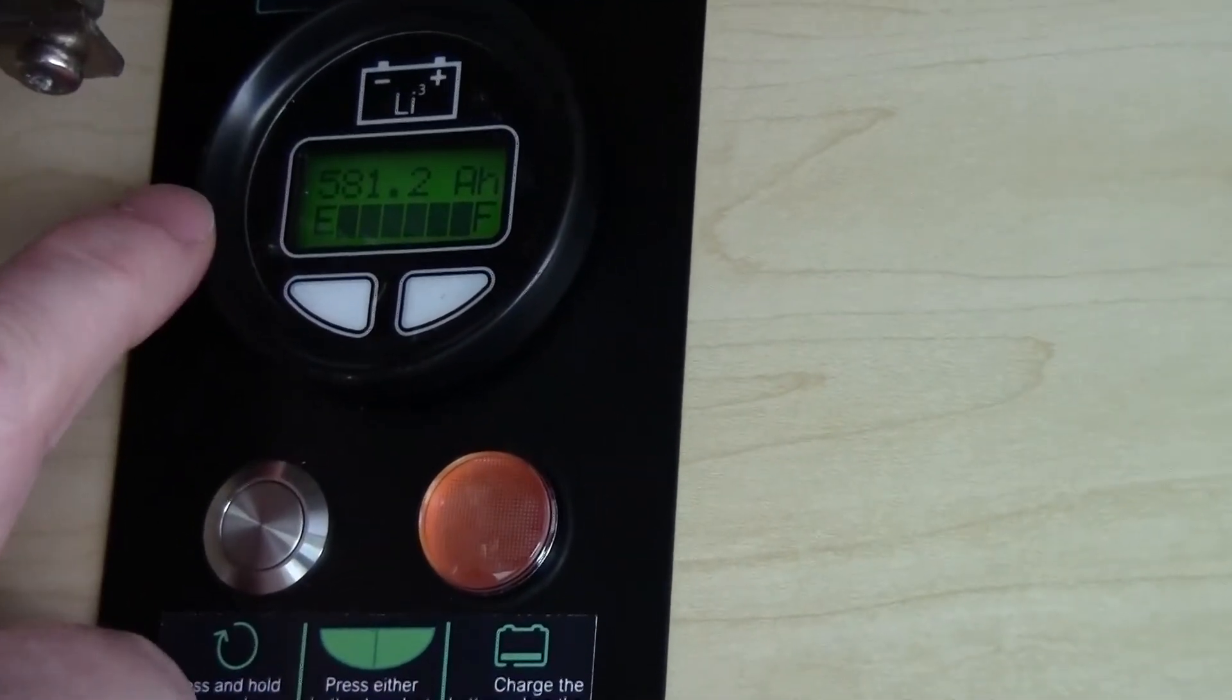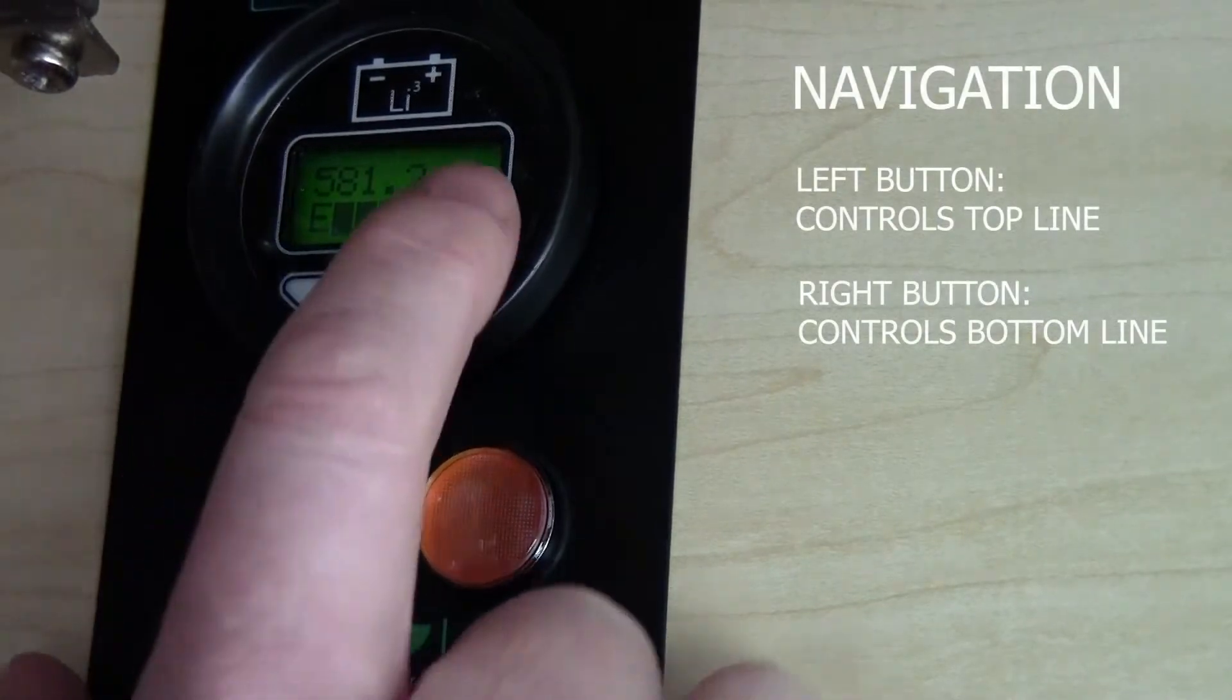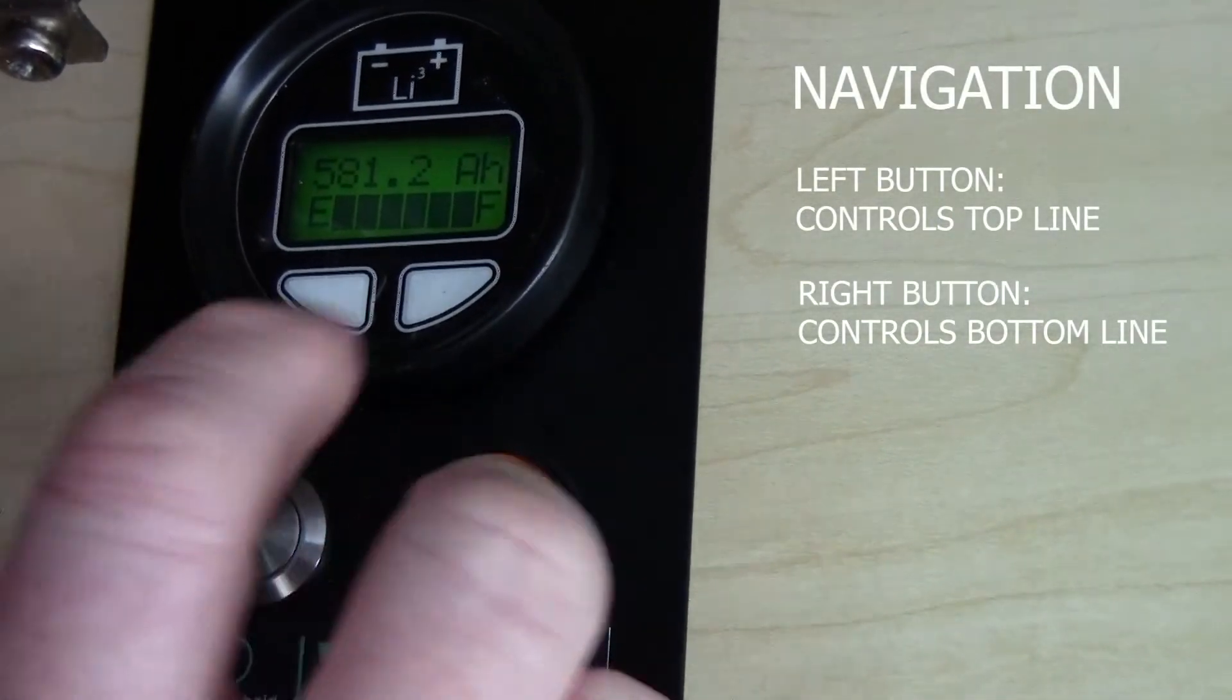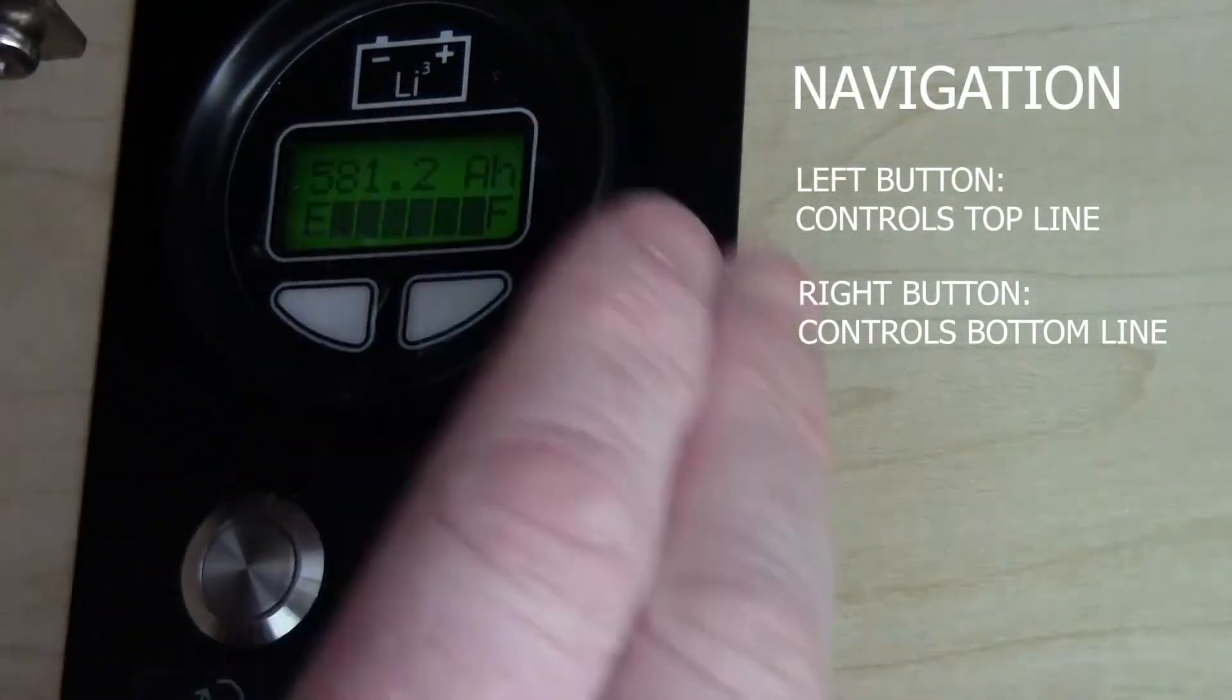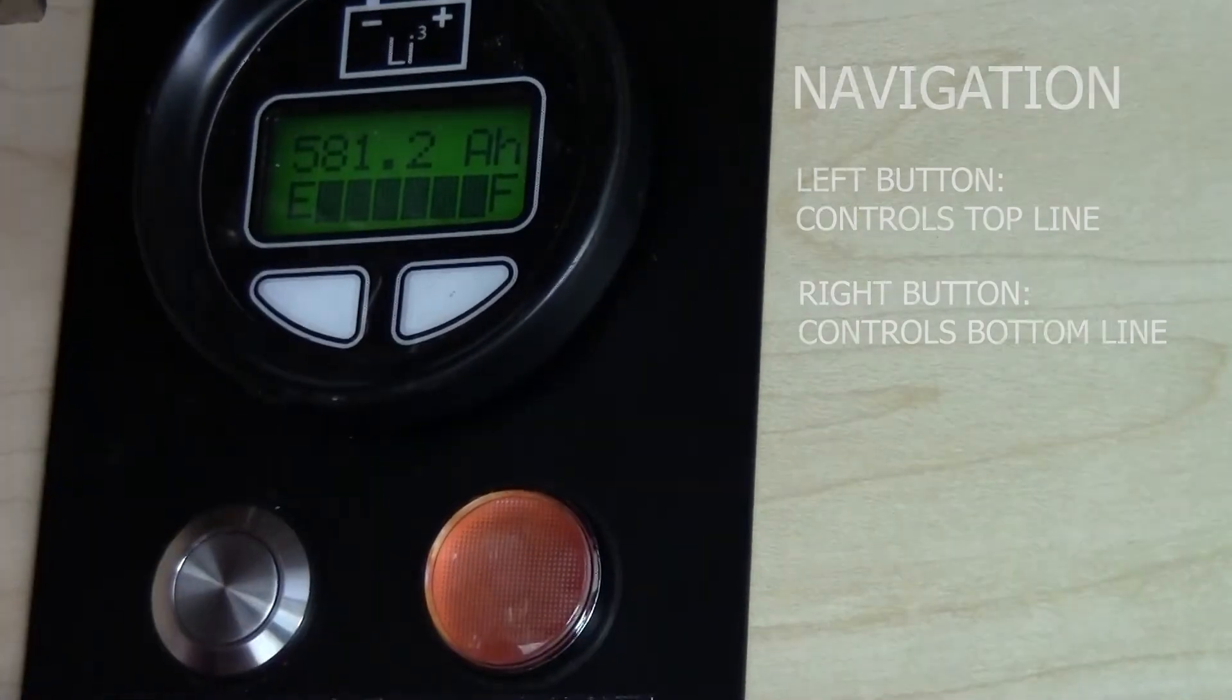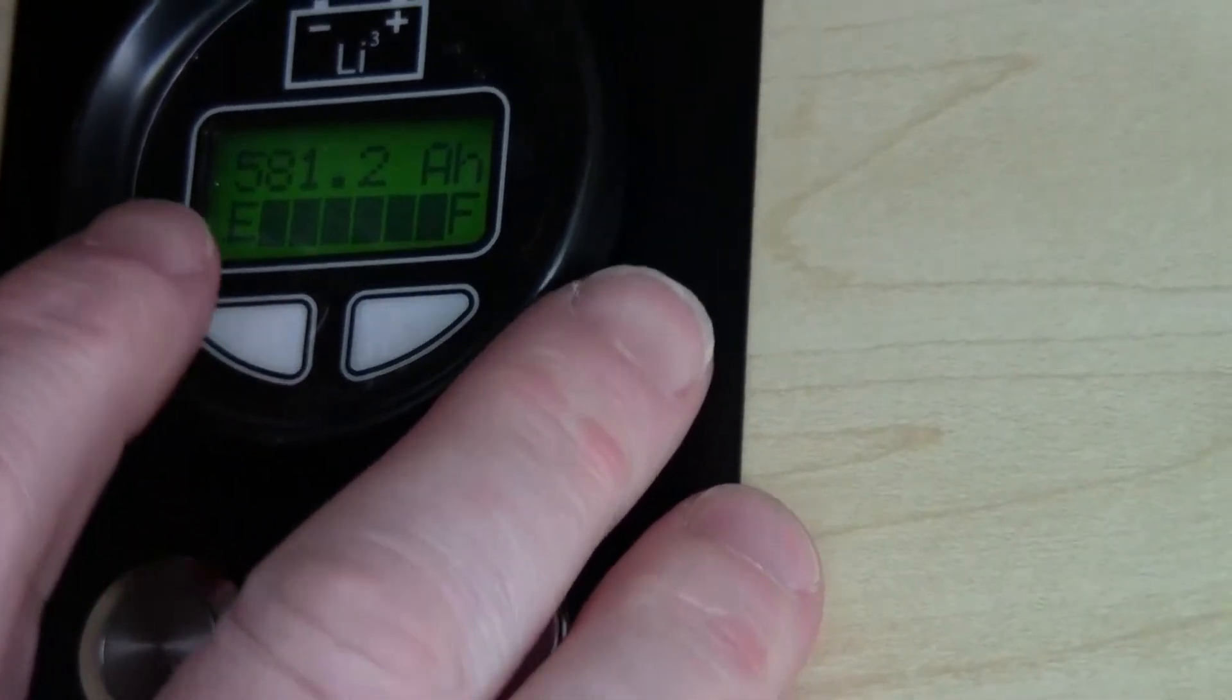Now you have a top line and a bottom line. The top line is controlled by the left button, the bottom line by the right button. It allows you to scroll through the same pieces of data for both, so you can show whatever two pieces of data are most important to you.